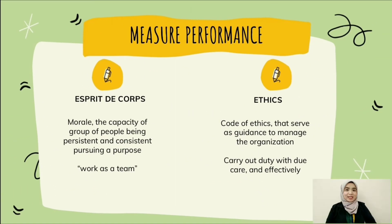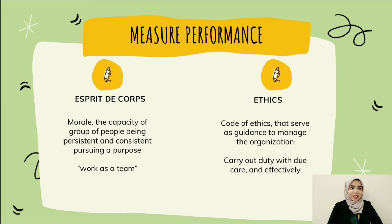The second-to-last criteria is esprit de corps, a French term meaning morale or enthusiasm, defined as the capacity of a group of people to be consistent and persistent in pursuing a purpose. This can be measured by how well the organization works as a team. The last criteria is ethics, which provides a code of ethics that serves as guidance to manage the organization.